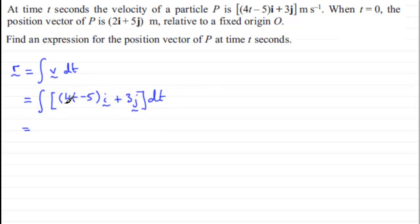And we integrate this then with respect to time. So for the first component here, integrating 4t with respect to t is 4t squared over 2, or in other words, just simply 2t squared. Integral of minus 5 with respect to t is minus 5t. And all of this is our i-component. And then for the j-component, integrating that gives us 3t in the j-direction.